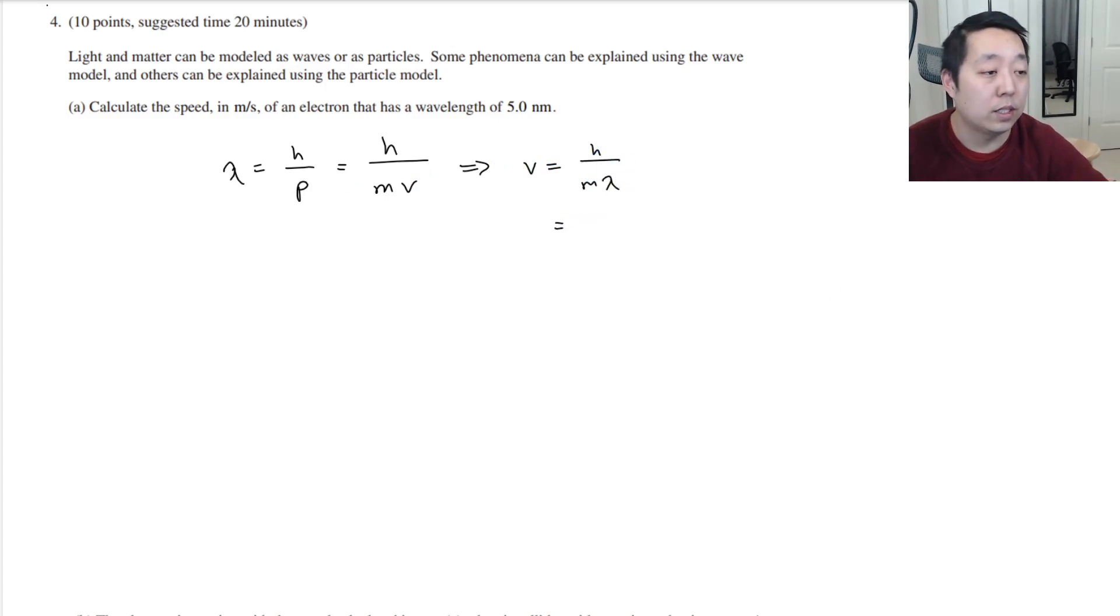So what is Planck's constant? I don't remember these constants off the top of my head. Planck's constant is 6.63 times 10 to the minus 34. The mass of an electron is 9.11 times 10 to the minus 31 kilograms. And the wavelength is 5 nanometers, that's 10 to the negative 9.